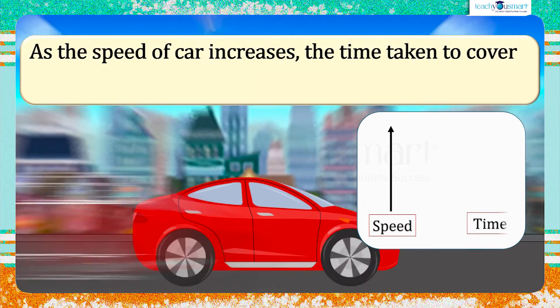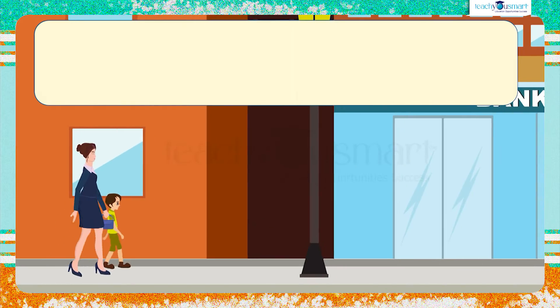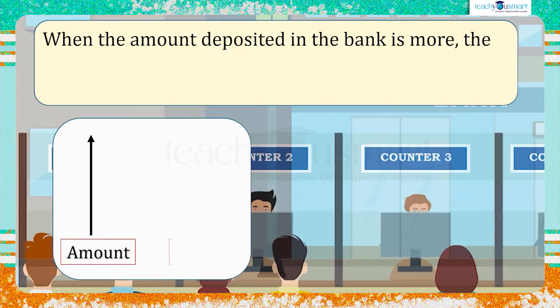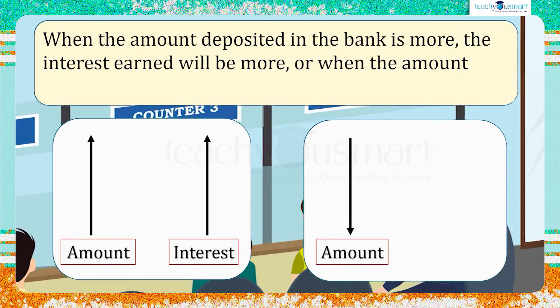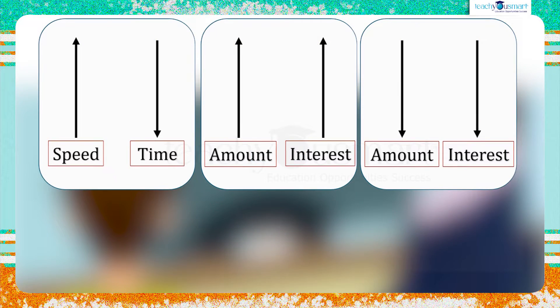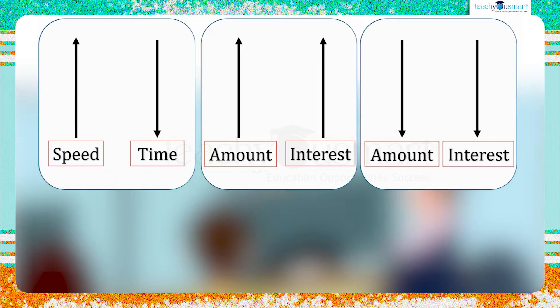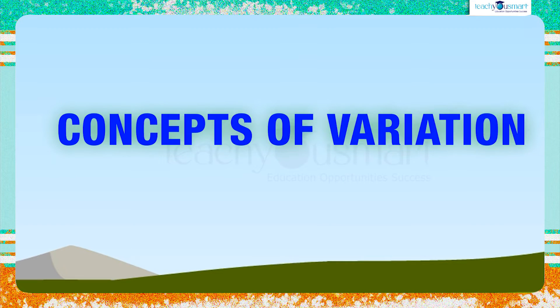In our daily life we have seen many situations, like when the speed of a car increases, the time taken to cover the distance decreases. When the amount deposited in the bank is more, the interest earned will be more, or when the amount deposited is less, the interest earned will be less. Here we can see a variation — a change in one quantity leads to a change in the other quantity. Today we are going to see the concepts of these changes or variations.